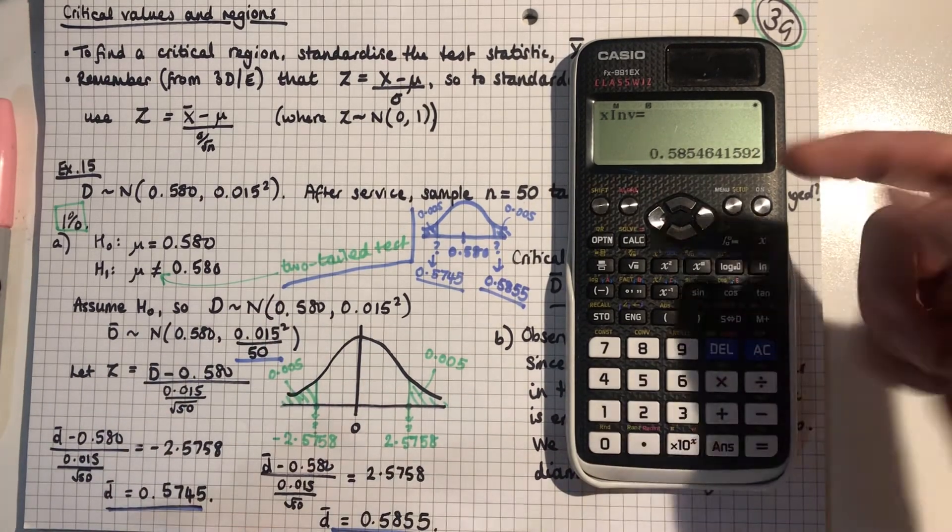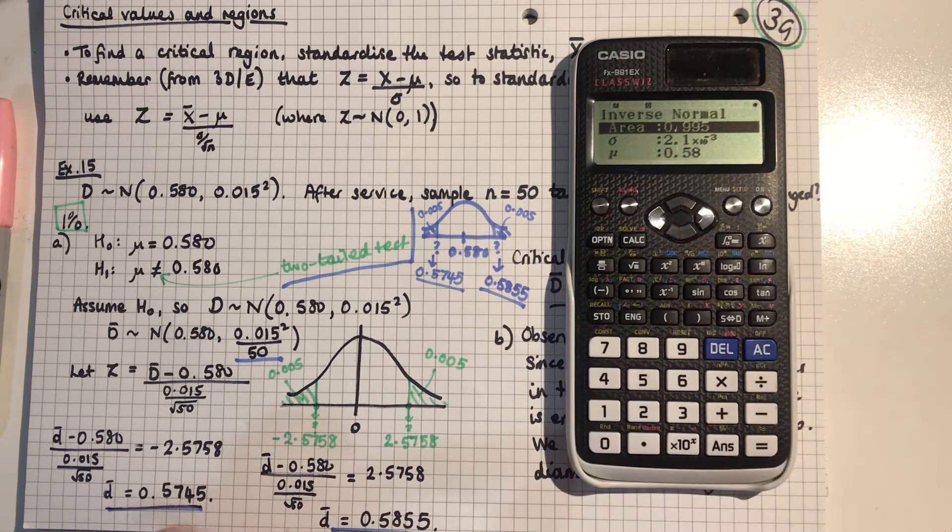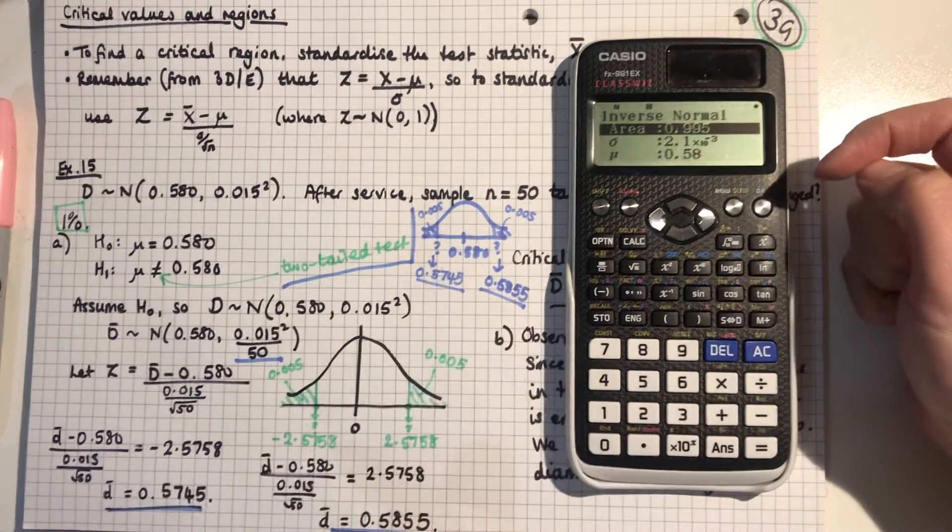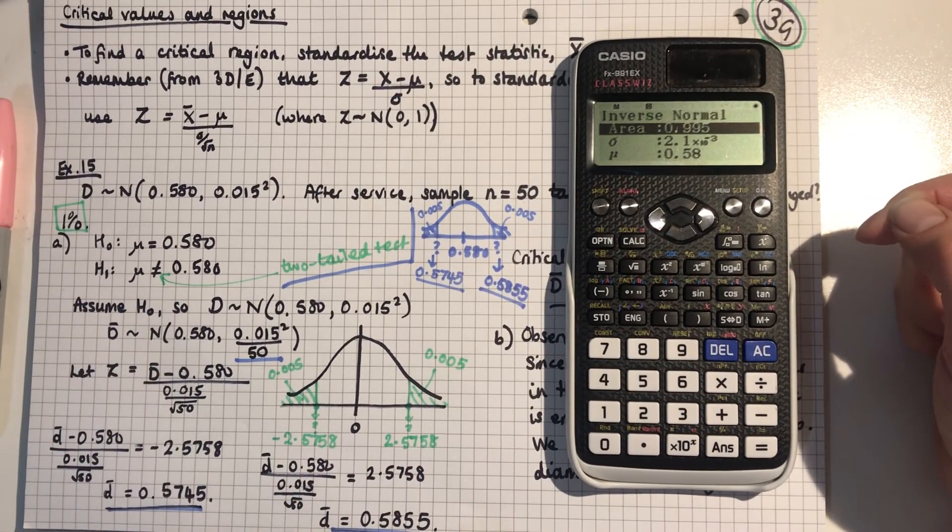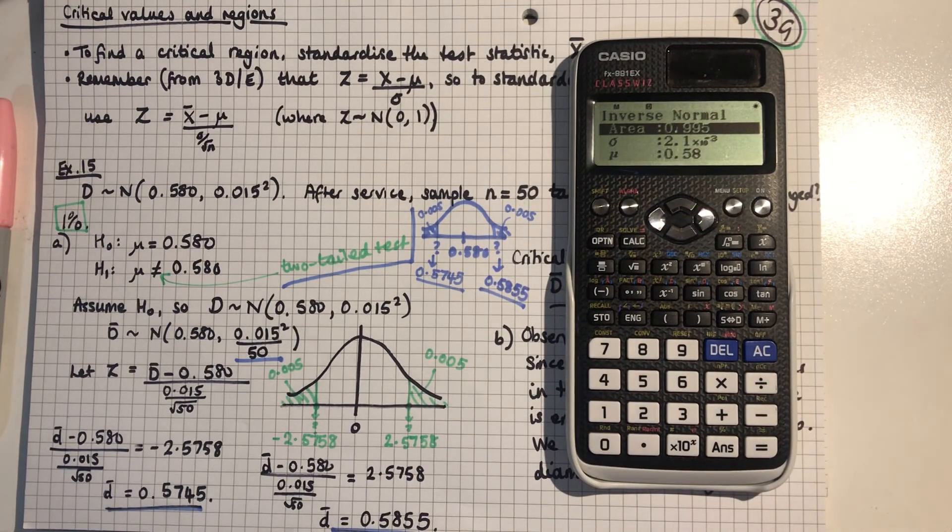Because you can't put unknowns into here. You have to put numbers in. So if you know the values of mu and sigma, just use your calculator with them. If you don't know either of them, then you have to use the standardization process. I hope that makes sense. Good luck and we'll see you soon.